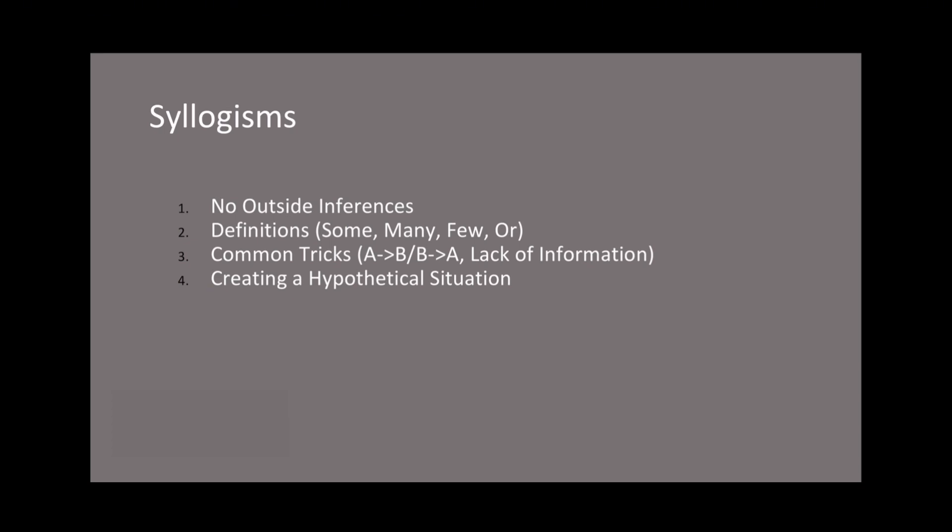Another really important definition is "or." If you get any statements with "or" in them, there are some really easy ways to disprove them which I'll show you later. "Or" basically means that only one of the two can be correct. If I say my hair is black or brown, that means it's one of the two — it can't be both and it can't be neither.